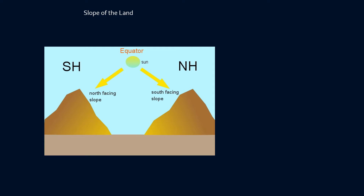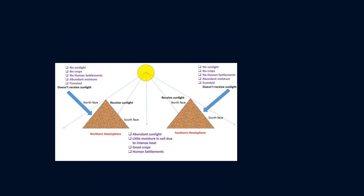In the southern hemisphere, the north-facing slopes are much warmer and the south-facing slopes are cooler. In the northern hemisphere, south-facing slopes receive more direct rays compared to the north-facing slopes, which receive slanting rays and are sheltered, giving them lower temperature. In the southern hemisphere, north-facing slopes receive more direct rays and are warmer compared to south-facing slopes. This is how the slope of the land influences the temperature.